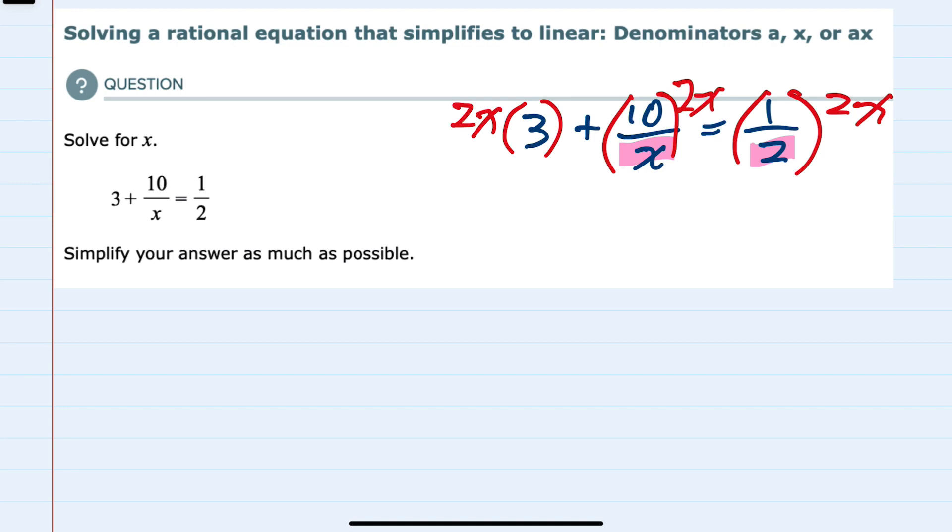So what does that do for us? First, on the left-hand side, 2X times 3 will give us 6X. But then in the next term, the X's cancel. I have an X in the denominator and an X in the numerator. Those cancel, so this now becomes plus 20.